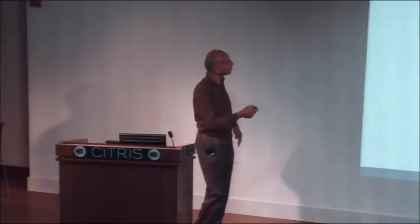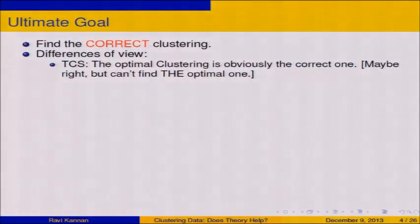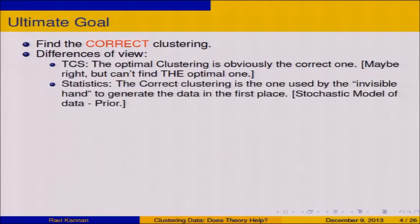There are three viewpoints I want to stress. First, theoretical computer science says the optimal clustering is obviously the correct one — maybe I cannot find it, but that is the right one. Statistics says the correct clustering is the one used by the invisible hand — like the invisible hand in economics. It's the data generator. There's a model of data, and the invisible hand generates the data and gives it to you. Whatever cluster it used to generate the data is the correct clustering.